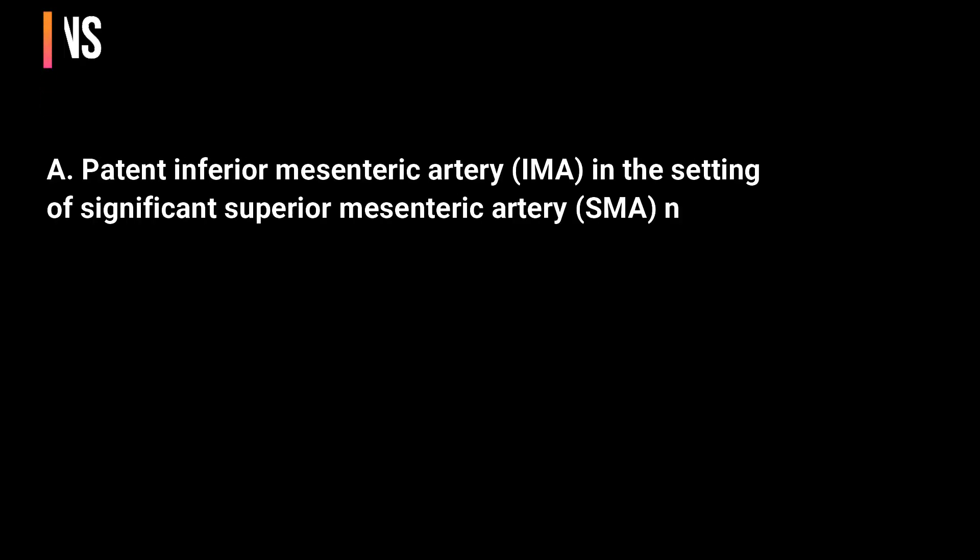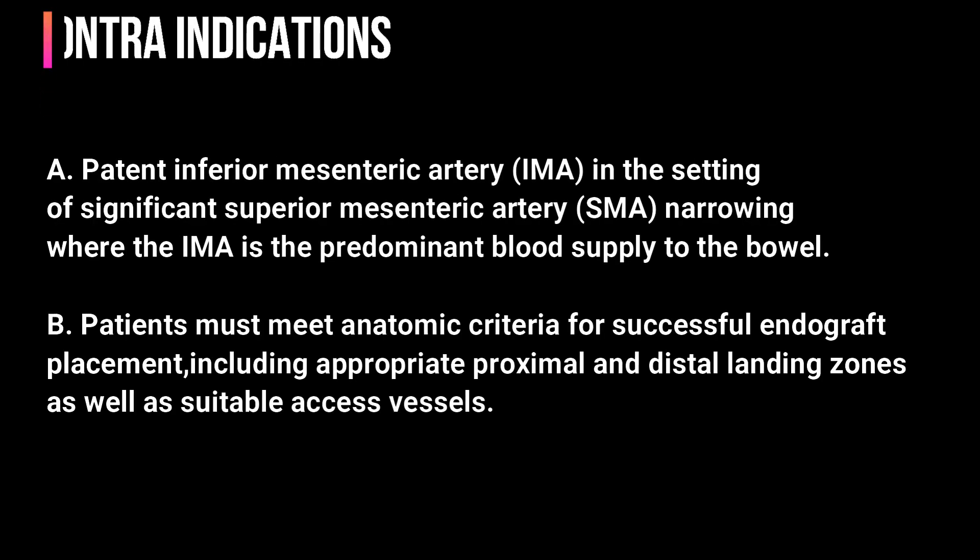The contraindications for abdominal aortic aneurysm repair include: A) patent inferior mesenteric artery in the setting of significant superior mesenteric artery narrowing, where the inferior mesenteric artery is the predominant blood supply to the bowel; and B) patients must meet anatomic criteria for successful endograft placement, including appropriate proximal and distal landing zones as well as suitable access vessels.